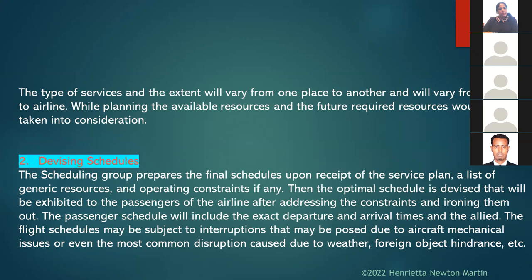The passenger schedule includes exact departure and arrival times and additional details. Flight schedules may be subject to interruptions — due to mechanical issues, weather, or foreign object hindrance. For example, a flight may be delayed because a bird came against the aircraft during takeoff. In airline parlance this is called foreign object hindrance, and we have a system called FOD — the Foreign Object Detector — to detect such occurrences.